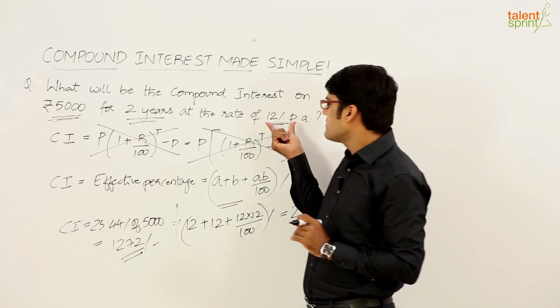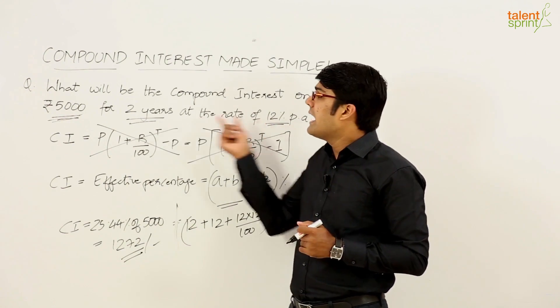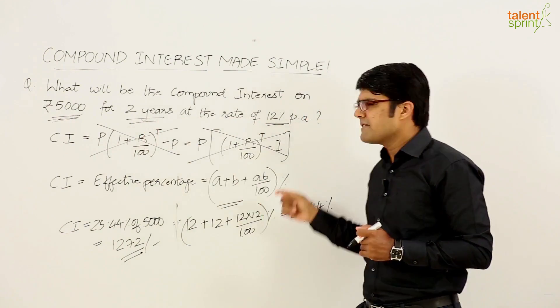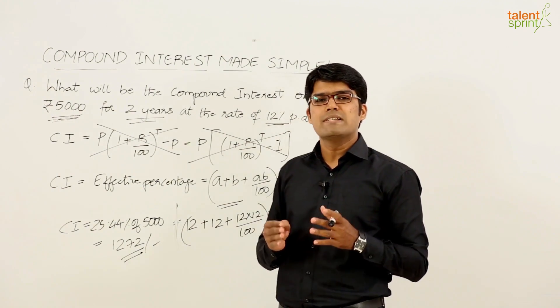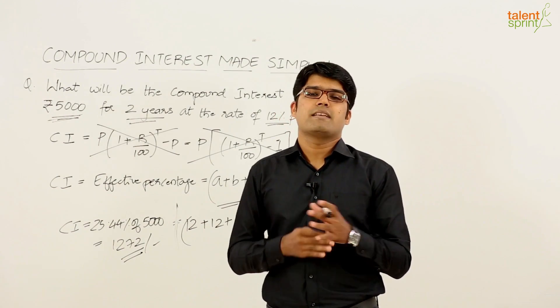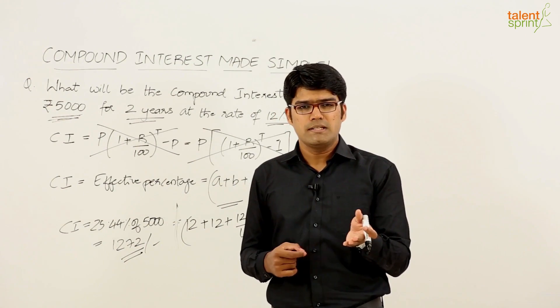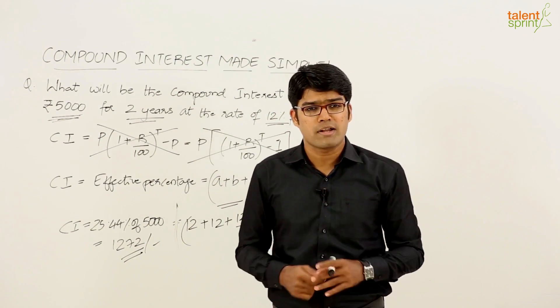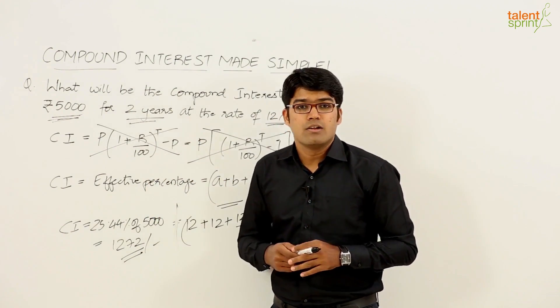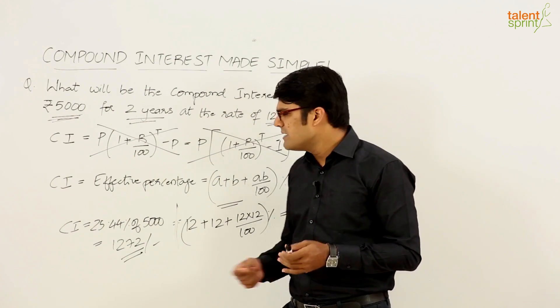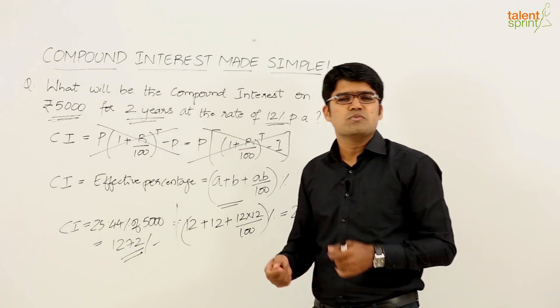Very simple. Just look at the percentage, the rate of interest and the given time period. Let us say for example, the rate is 7 percent per annum. What will be the compound interest for 2 years? 7 plus 7 plus 7 into 7 by 100 which is 14 plus 0.49, 14.49 percent of rupees 5000. And if you follow our speed math techniques to do percentage based calculations, you will be able to simplify this in about 3 to 4 seconds.